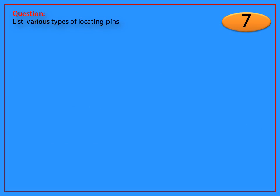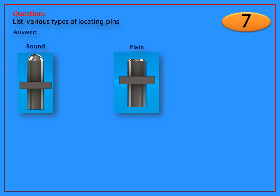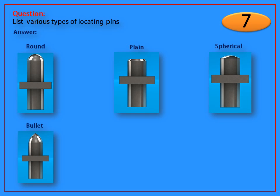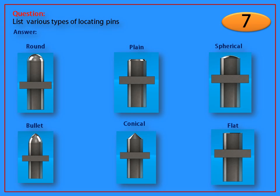Question: List various types of locating pins. Answer: round, plane, spherical, bullet type, conical, and flat.